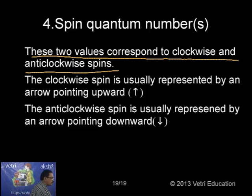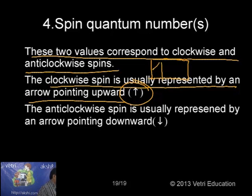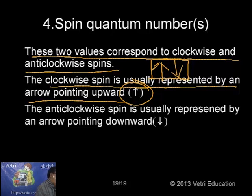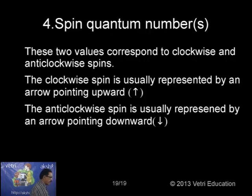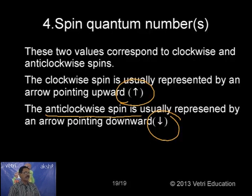The clockwise spin is represented by an arrow pointing upward. In an orbital box diagram, an electron pointing upward means it is moving clockwise, and an electron pointing downward means it is moving anticlockwise. When discussing electronic configuration in the next class, this will be explained more clearly. The only remaining part to discuss under atomic structure is electronic configuration.